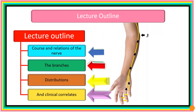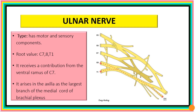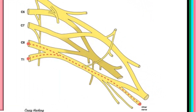We start where the nerve starts. The ulnar nerve is one of the infraclavicular branches of the brachial plexus — specifically the largest branch of the medial cord, running a deep course even in the axilla. It has a motor component and a sensory component. Its root value is C7, C8, and T1, with the main root value being C8 and T1. The C7 contribution comes from the ventral ramus of C7.